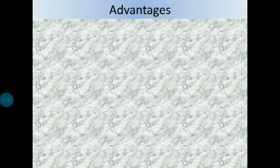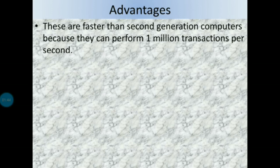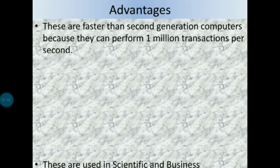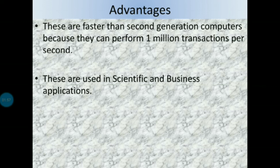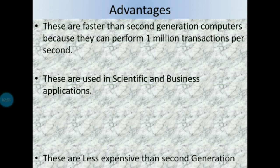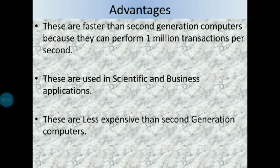Coming to advantages — what are the advantages of third generation computers? Using integrated circuits, the third generation computers were very fast compared to second generation computers, meaning in one second it could perform one million transactions. The third generation computers were used in scientific applications and business applications, and these were less expensive than second generation computers.